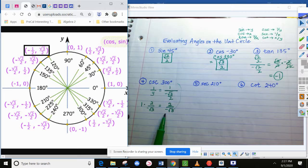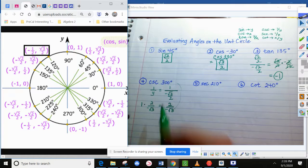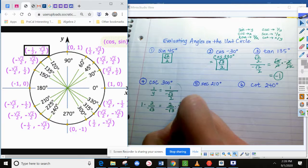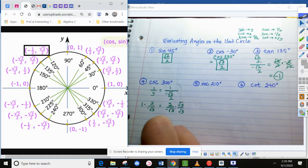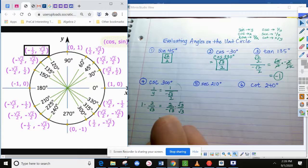But we do want to clean this up and rationalize because we can't leave that answer with the square root on the bottom. When you do that, that will be 2 square root of 3 over 3. And since we had a negative on one of those, we need a negative on our answer.